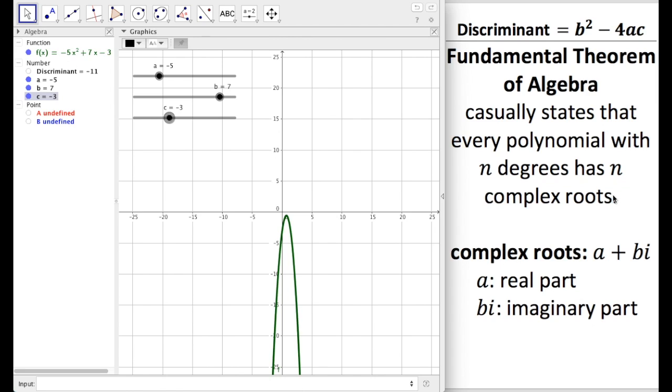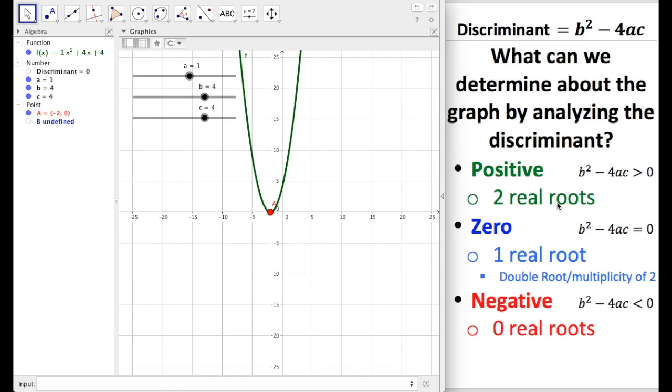So we must always have two complex roots. But Mr. Leach said sometimes we had two, sometimes we had one, sometimes we even had zero. Well, yeah, those were the real numbers that we observed. There are actually other numbers going on there, and that's the complex roots part. Complex roots or complex numbers can be written as a plus bi, where a is the real part and bi is the imaginary part.